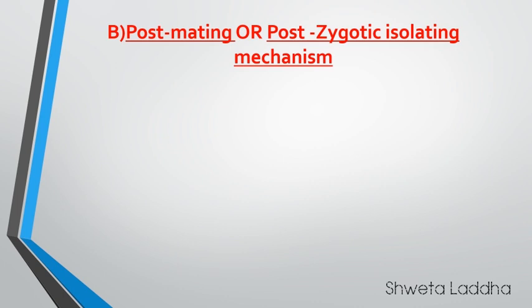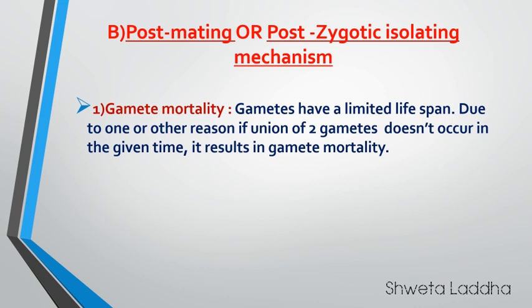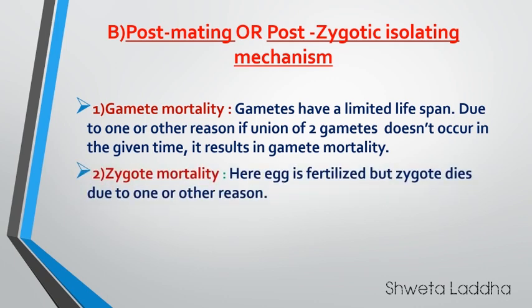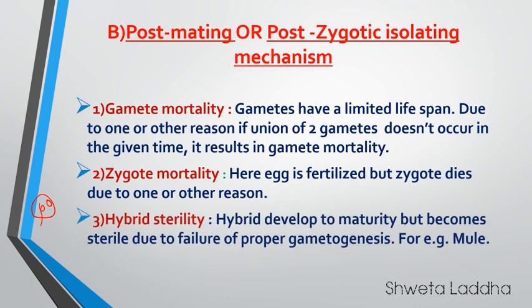The post-mating or post-zygotic isolating mechanisms are: first, gamete mortality — gametes have a limited lifespan and due to one or more reasons there is no union of gametes within the stipulated time, resulting in gamete mortality. Second is zygote mortality — the gametes meet and fertilize forming a zygote, but the zygote dies. Third, the gametes mate, form a zygote, and a hybrid is also produced, but the hybrid is sterile. The best example is a mule, a hybrid of a donkey and a horse — produced but sterile. These are post-mating or post-zygotic isolating mechanisms.